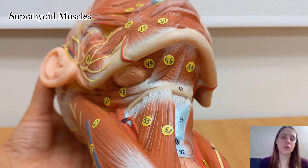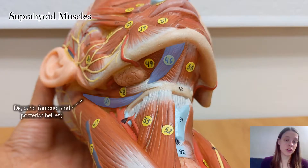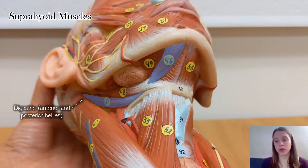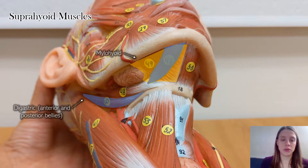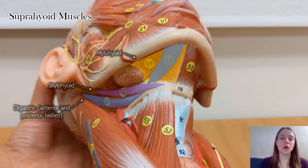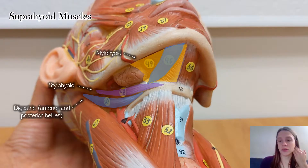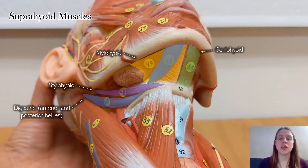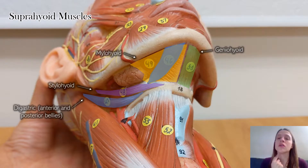In the suprahyoid group there's the digastric, which has an anterior and a posterior belly. The mylohyoid goes side to side and makes up the floor of the mouth. The stylohyoid is connected to the styloid process of the temporal bone. And the geniohyoid goes front to back.